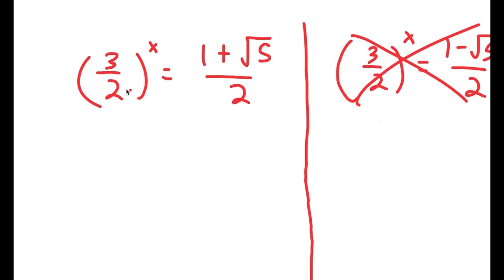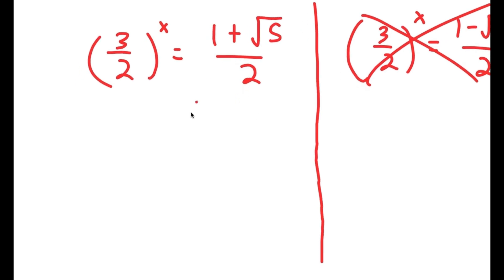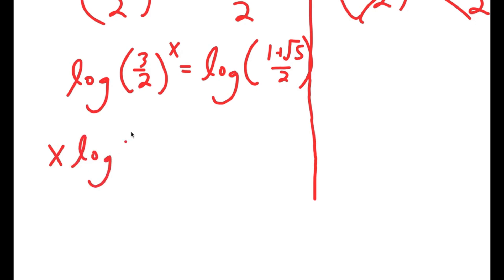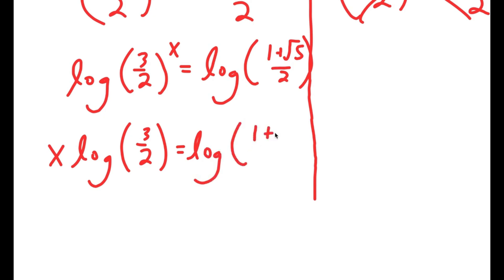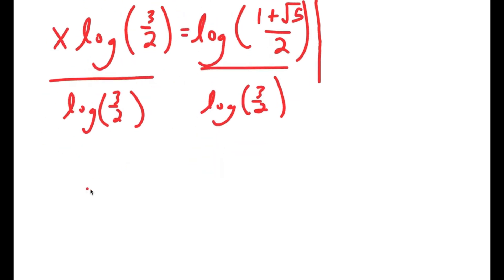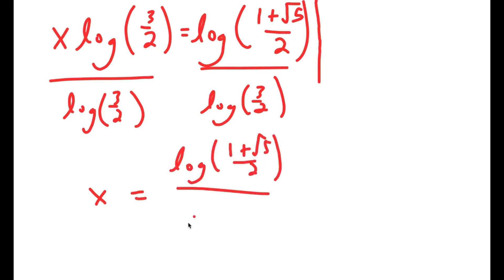The only equation left is 3 over 2 to the power of x equals 1 plus the square root of 5 over 2. To solve this I'll take the log on both sides: log of 3 over 2 to the power of x equals log of 1 plus the square root of 5 over 2. This becomes x times log 3 over 2 equals log of 1 plus the square root of 5 over 2. Dividing both sides by log 3 over 2 gives x equals log of 1 plus the square root of 5 over 2, divided by log of 3 over 2.